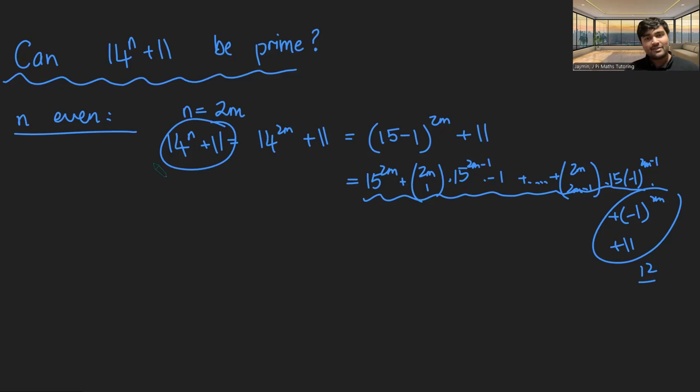Cool. This is very nice. And this is how we can prove that when n is even, this thing here will be multiple of 3. And so 14 to the n plus 11 can't be prime.